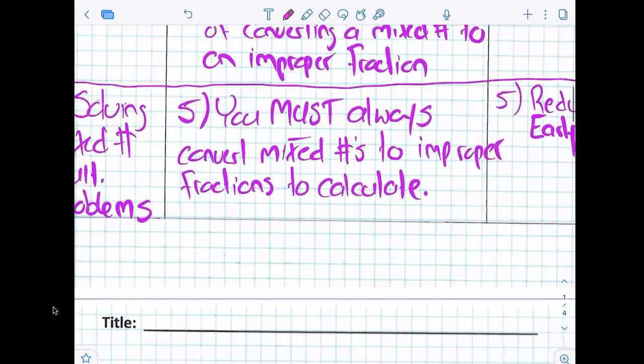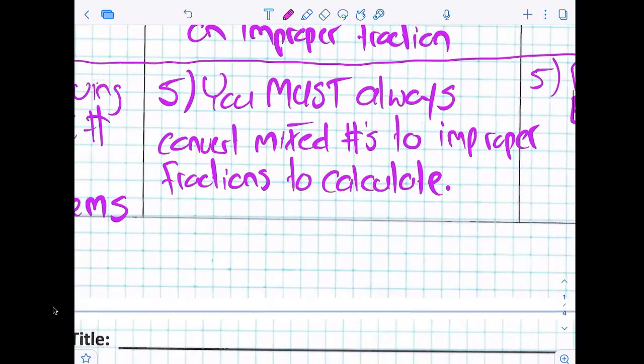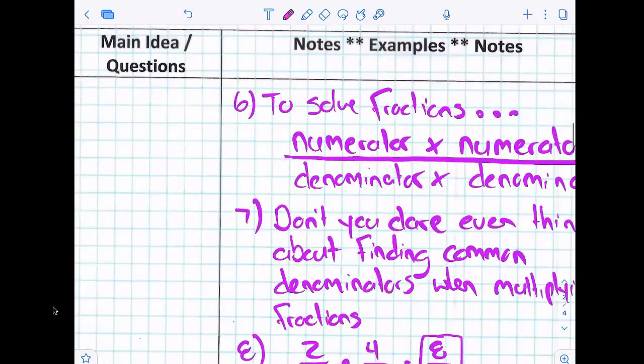I'm going to skip around the world. OK, here we go. On the count of three, I want you guys to read this one with me. On the count of three, we're going to read note five. One, two, three. You must always convert mixed numbers to improper fractions to calculate. OK, let's maybe try to stay together. We always must convert mixed numbers to improper fractions to calculate.